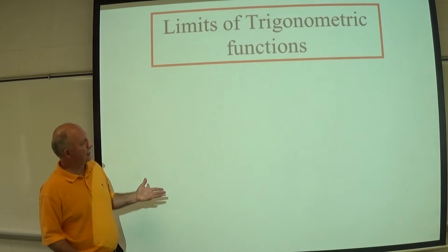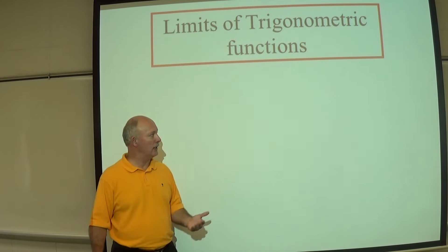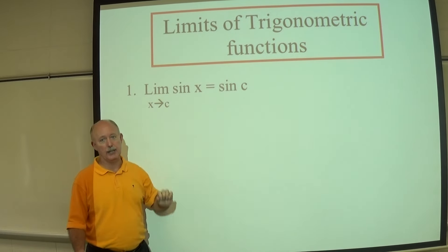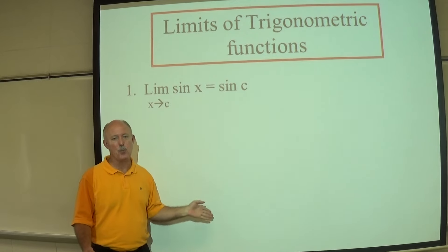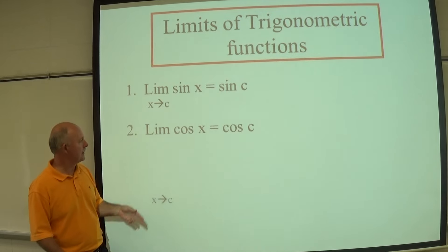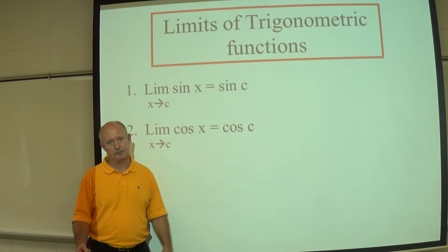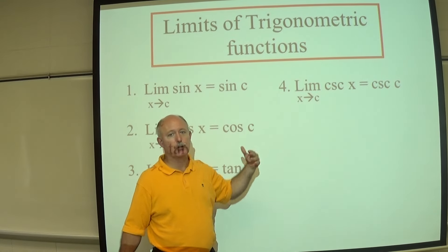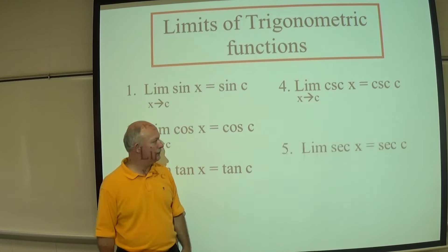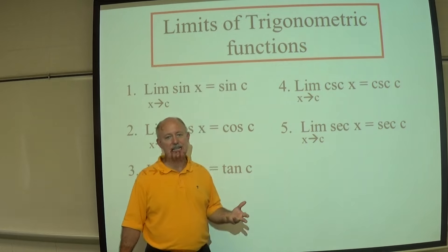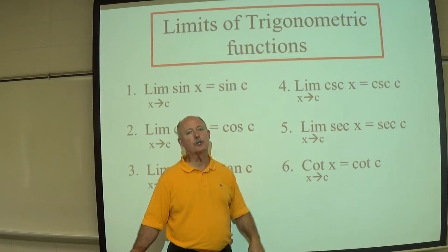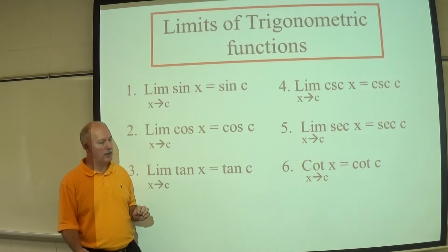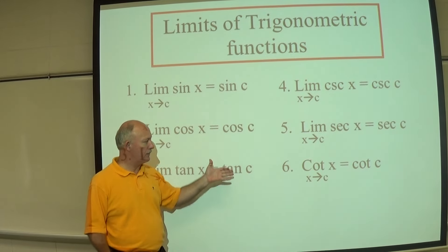Now let's look at the limits of trigonometric functions. With trig functions you use direct substitution just like any other function. The limit as X approaches C of sine X is sine C; cosine X gives cosine C; tangent X gives tangent C; secant X gives secant C; and cotangent X gives cotangent C. In each case, you simply plug the value C in for X and evaluate.